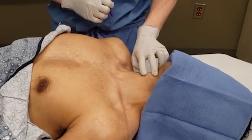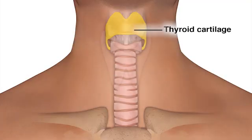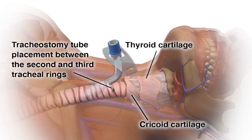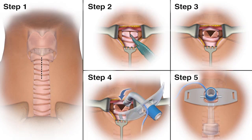Palpate the patient's neck to identify key anatomical landmarks. These include the thyroid cartilage, the cricoid cartilage, and the sternal notch. The ideal location for placement of the tracheostomy tube is between the second and third tracheal rings. Make sure to check for a high-riding innominate artery that may overlie the area of the planned incision. An open tracheostomy should be performed instead if the patient has a high-riding innominate artery.